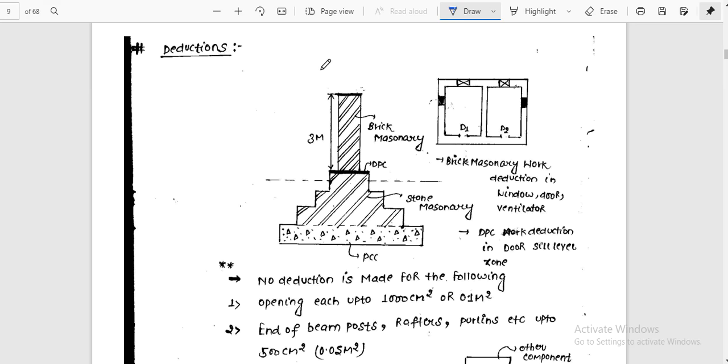Today we will move to Deduction, which is one of the important questions. If you see particular foundations: first is PCC (Plain Cement Concrete), then stone masonry, then DPC, and then brick masonry. For brick masonry works, we'll cover deduction in windows, doors, and ventilators.